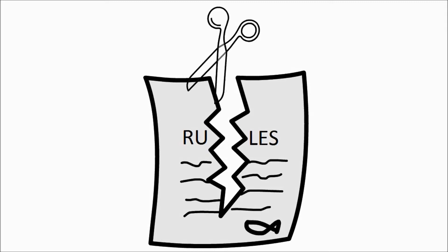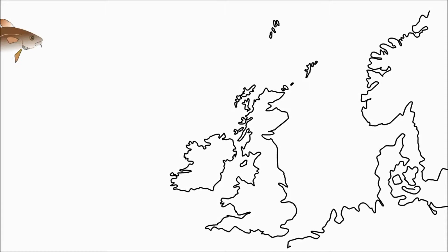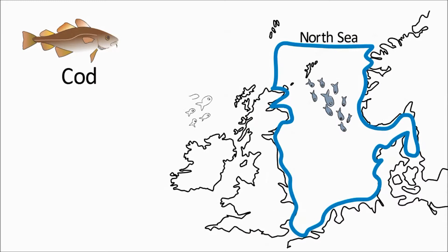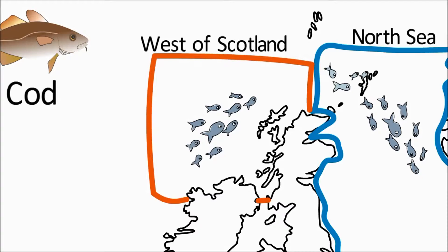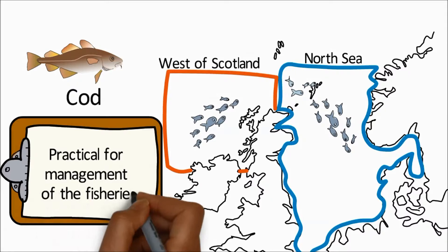In some cases, these simple rules are challenged, as the stock boundaries don't always match the biology of the fish population. For example, in Scotland there are two stock assessment areas for cod, the North Sea and the West of Scotland. But cod in these two areas aren't separate biological populations, and the boundaries have instead been drawn in a way that is most practical for the management of the fisheries.